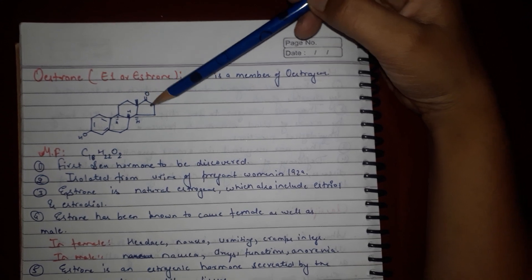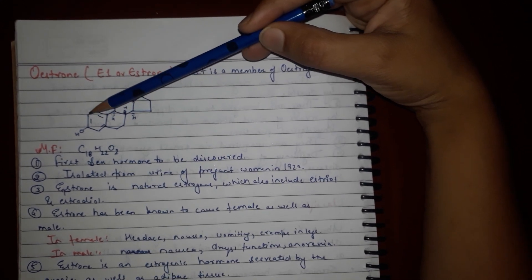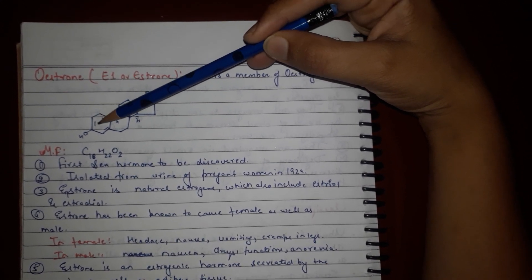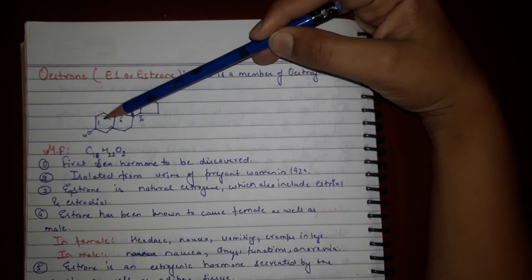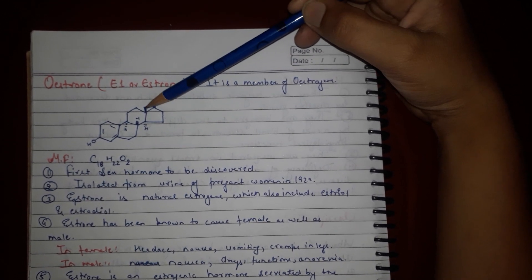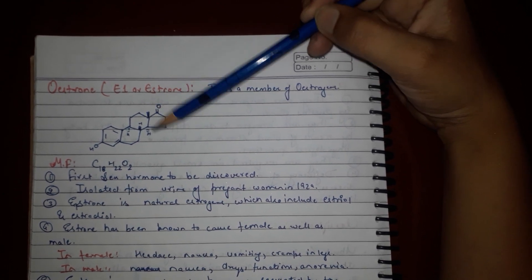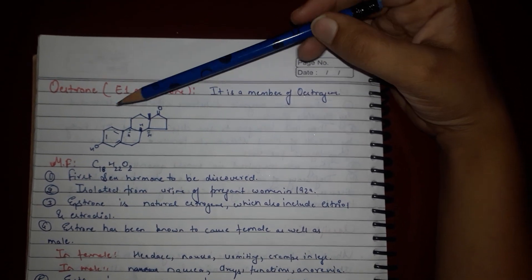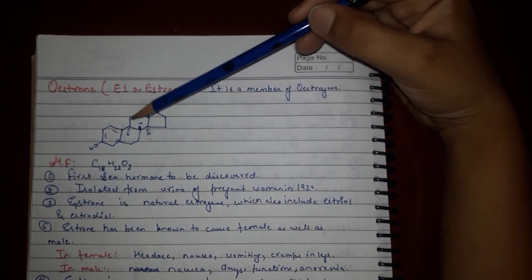The structure of estrogen consists of three six-member rings, one pentane ring. The first ring will consist of three double bonds, one OH group, one keto group on the pentane ring, and one methyl group on that position.